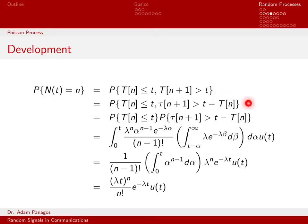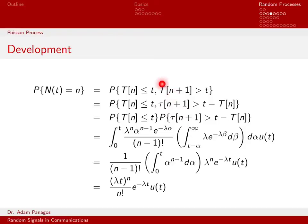Moving from line one to line two, the only change is that we've substituted the relationship between T and tau. The time to the n+1 arrival can be written as T_n plus tau_{n+1}. So T_{n+1} becomes tau_{n+1} plus T_n, and then T_n is moved to the other side of the inequality. That's all that's happened here.